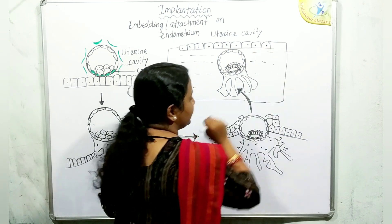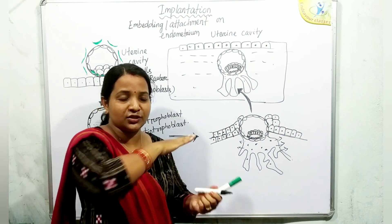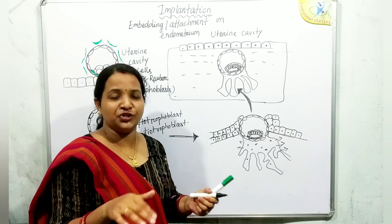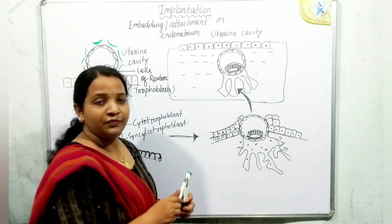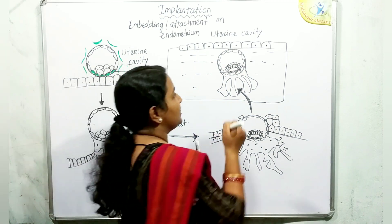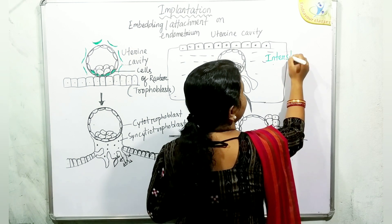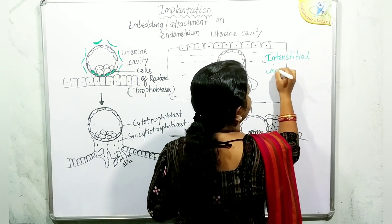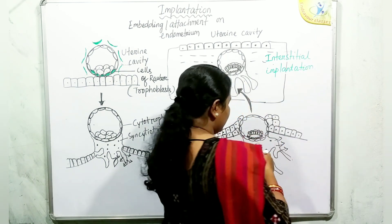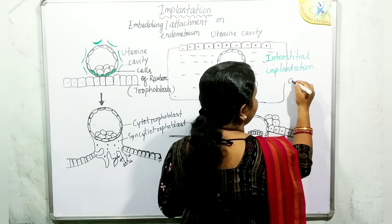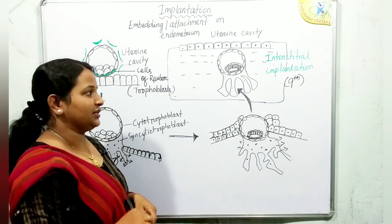Finally, the structure is now completely inside the endometrium. This kind of implantation, where the blastocyst is completely buried inside the endometrium, is called interstitial implantation. In the case of humans, this is the type of implantation that occurs. By day 9 the blastocyst is completely buried inside the endometrial wall.